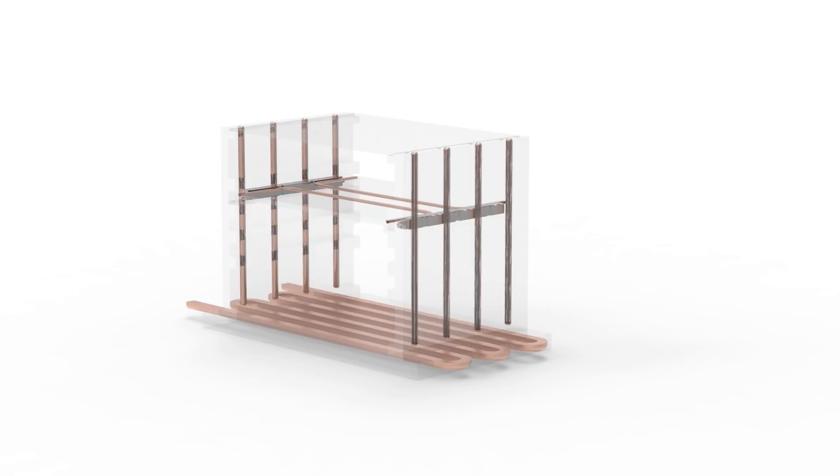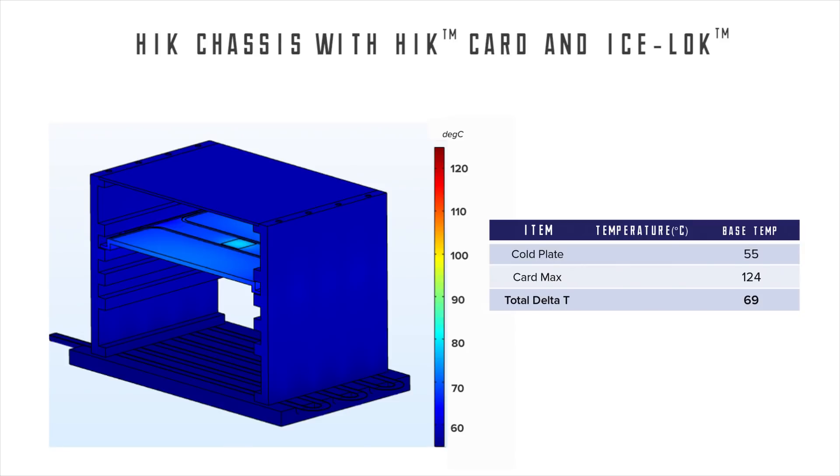The final area affecting overall delta T is the conduction through the card guide or chassis. Each sidewall must conduct heat from the card interface to the liquid-cooled base. Again, the baseline is aluminum with a thermal conductivity of 167 watts per meter Kelvin. To reduce the gradient, we convert the chassis to a high-K sidewall by embedding heat pipes. This final change drops the overall delta T by an additional 13 degrees C.